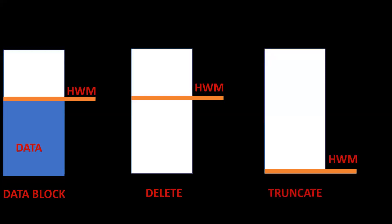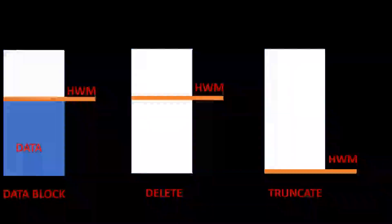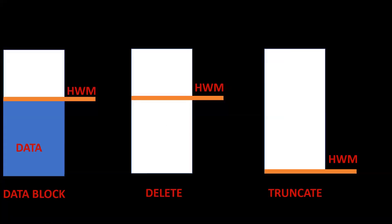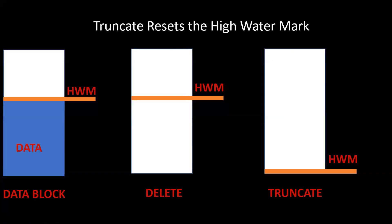That's why we prefer TRUNCATE when we want to delete all rows, so that it resets the high watermark. The drawback of DELETE is that if you query the table after deleting all records, the optimizer thinks there is data below the high watermark and tries to fetch it, which takes additional time. So it is better to use TRUNCATE. We can conclude that TRUNCATE resets the high watermark.